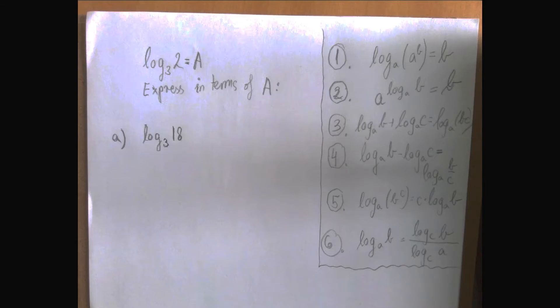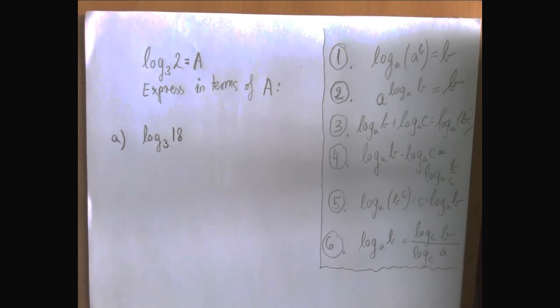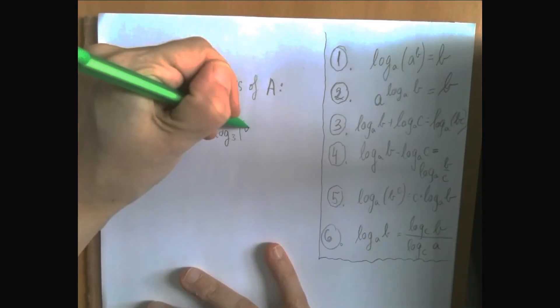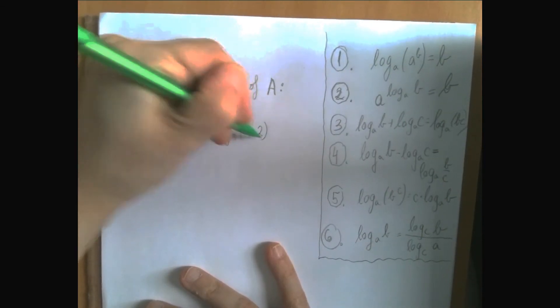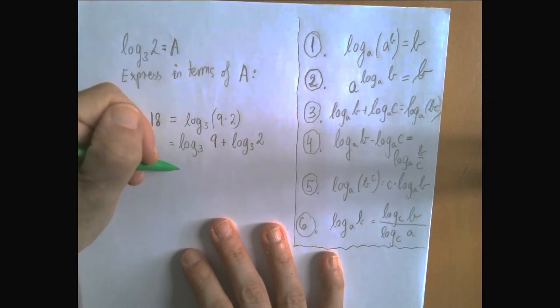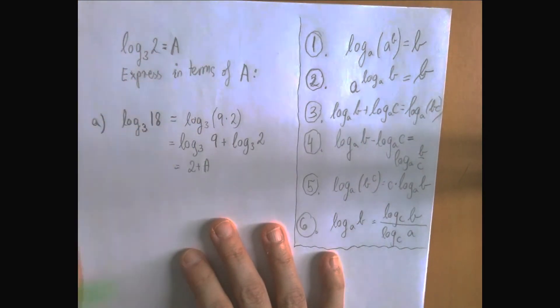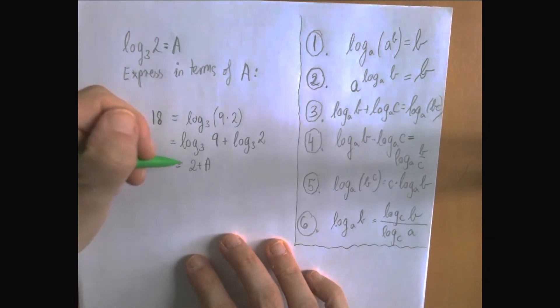Let's see the first example. We have to express log 3 of 18 in terms of a. So let's look at 18 as a product. It's 9 times 2. So log 3 of 18 is log 3 of 9 plus log 3 of 2. Log 3 of 9 is 2. Log 3 of 2 is a. So we have 2 plus a.